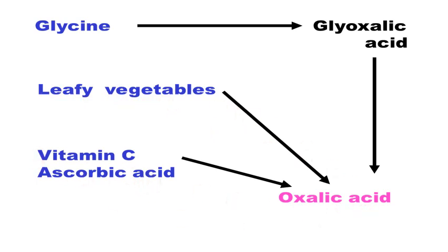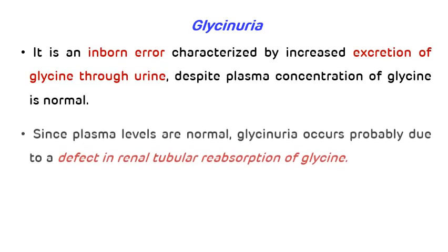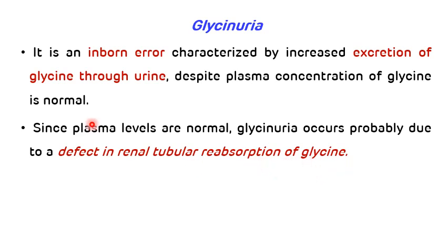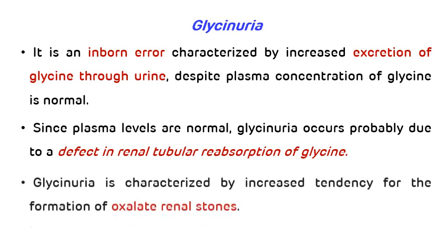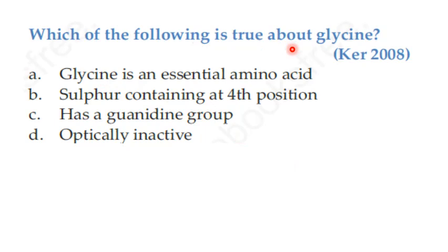The third disorder associated with glycine metabolism is glycinuria — an inborn error characterized by increased excretion of glycine in the urine but a normal concentration of glycine in the blood. This indicates a defect in renal tubular reabsorption of glycine. In summary, the three disorders are: non-ketotic hyperglycinemia, primary hyperoxaluria, and glycinuria.